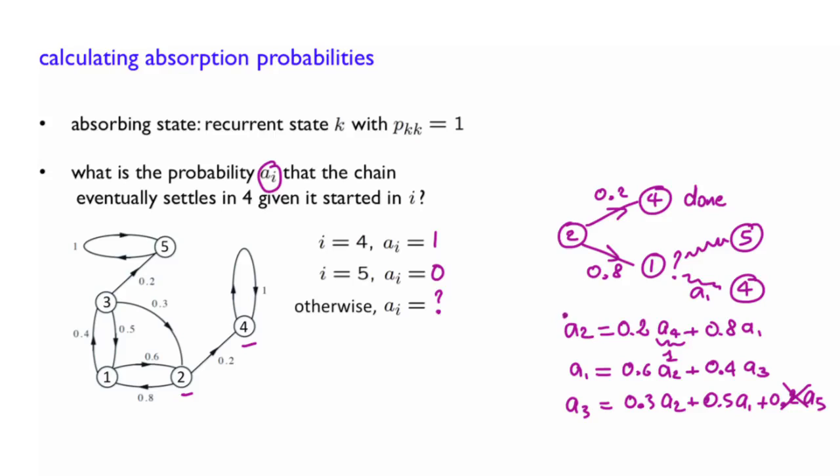So in the end, you get a system here. After you replace a4 by 1 and a5 by 0, you get a system of 3 linear equations with 3 unknowns. And it is easy to solve. I will not do that. You can do it yourself. But here are the results. You will get a of 1 equals 18 over 28, a of 2 will be 20 over 28, and a of 3 will be 15 over 28. Now, I expressed them so that we can compare them easily. And as a sanity check, you can verify that indeed, the probability starting from 2 will be larger than the probability starting from 3. And it turns out that a of 1 will be in between the other two. So these probabilities are consistent with our previous intuitions.